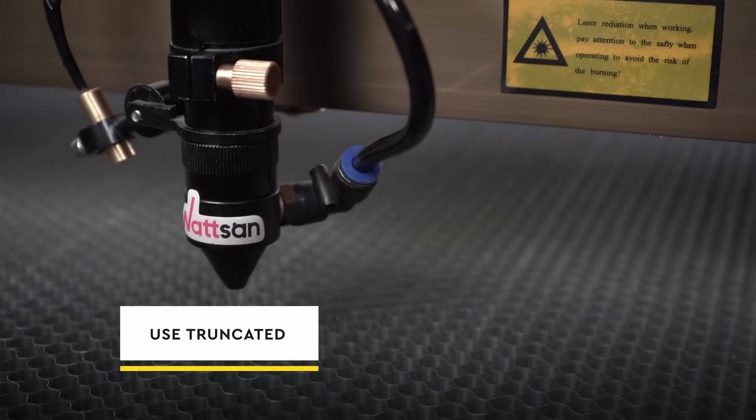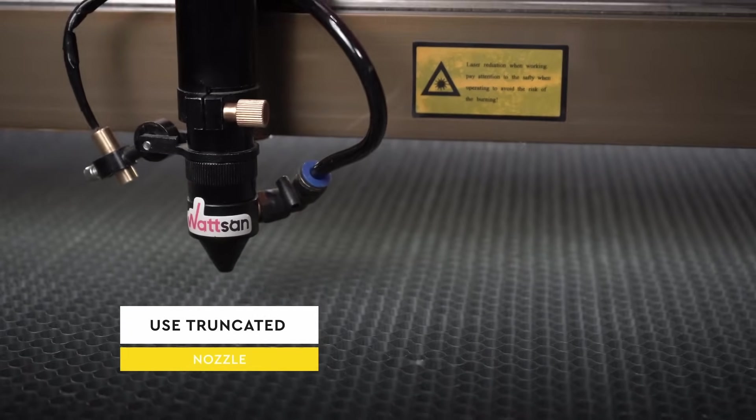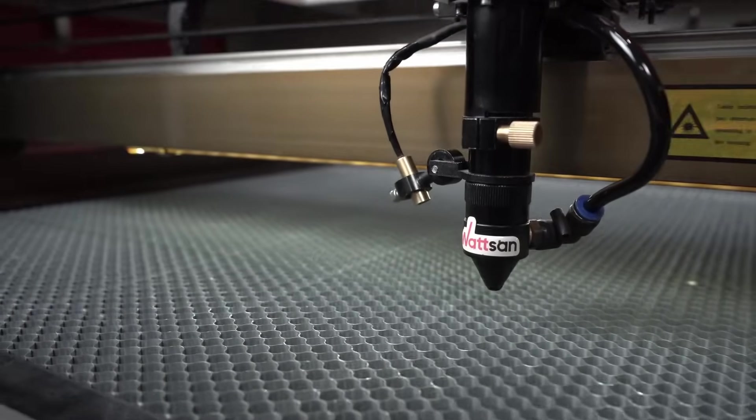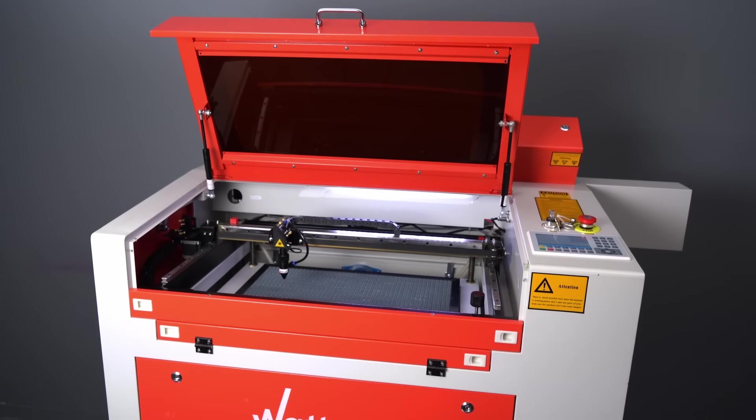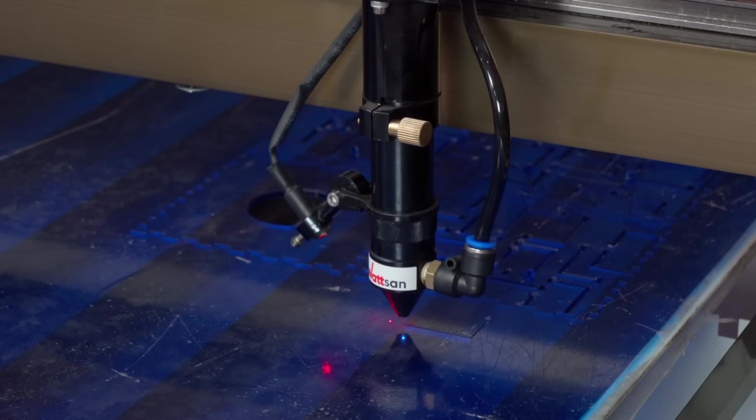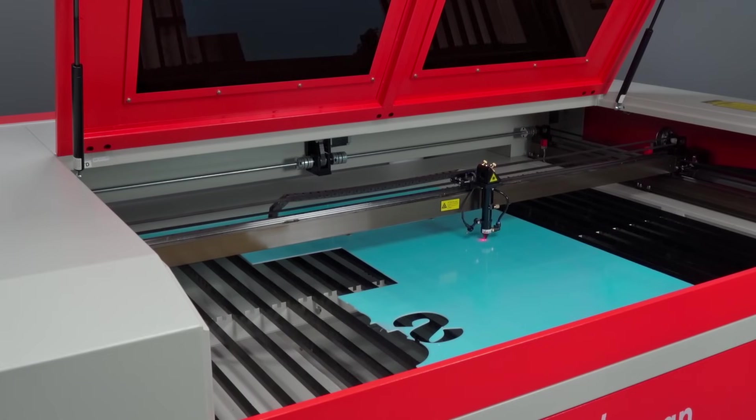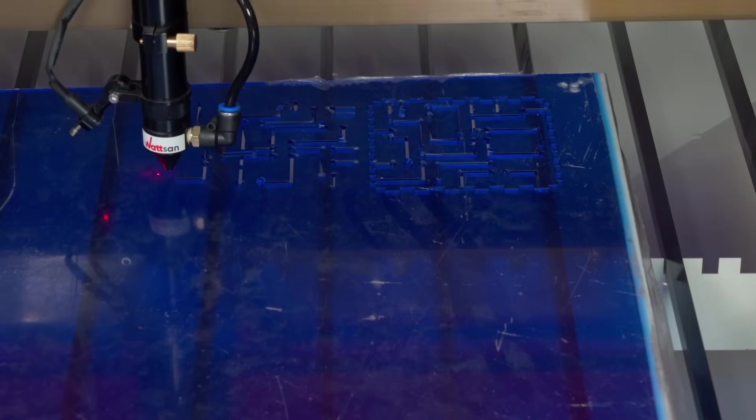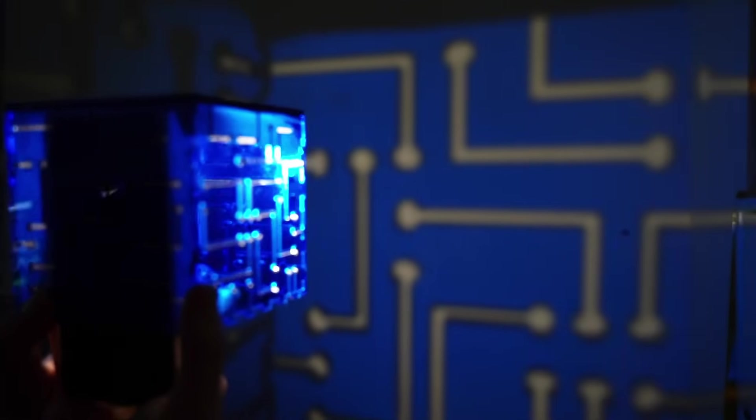Watson has different nozzles depending on the model and application. The 0503 and 6040 engravers have an extended nozzle, as these machines are designed for engraving. This 6mm diameter nozzle disperses the airflow so that the combustion and cutting products do not stick to the surface of the material. This prevents the formation of soot.